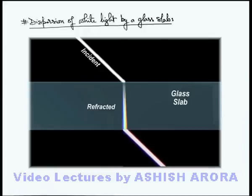The edges of this emerging beam will be slightly bluish and reddish due to the violet and red rays available at the edges. This is the phenomenon which happens when dispersion of white light takes place. And when a screen is placed after the glass slab, only a white band is obtained with a slightly reddish and bluish pattern on the edges of this band.